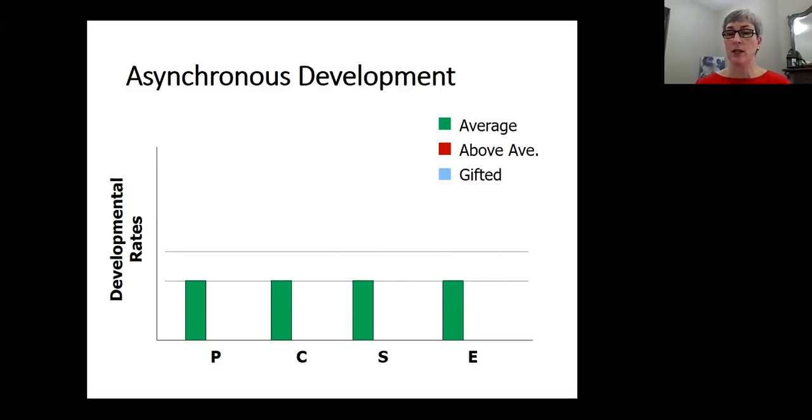So on the screen, P stands for physical, C is cognitive, S is social, and E is emotional. In the majority of people, those four areas of development progress at a very similar rate and in a very integrated way. There's a group of students that are more advanced than others. Their developmental rate is a little bit faster. Everything about them is a little bit more advanced.